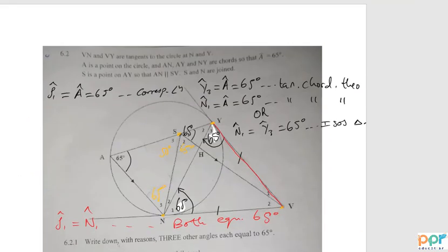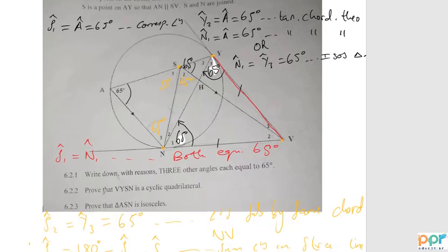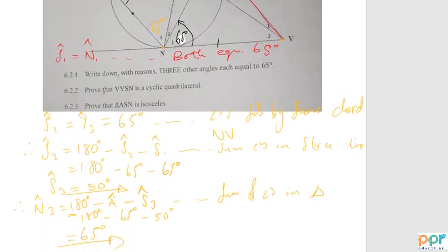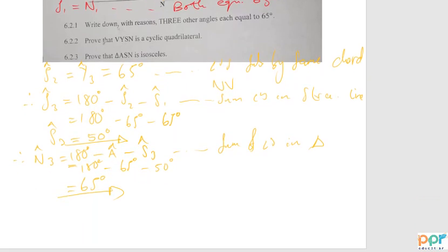So you've proven now that angle N3 is 65 degrees. That's the result. Triangle ASN is an isosceles triangle because angle N3 equals angle A, both equal to 65 degrees.